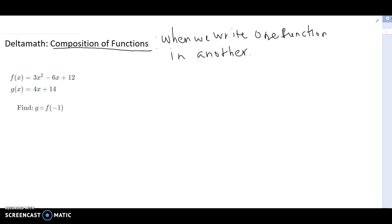This is an example from composition of functions from delta math. So let's go ahead and look at this problem. It gives us f of x equals 3x squared minus 6x plus 12. And g of x is 4x plus 14. And it's asking us to find g composed of f negative 1. If we can review that this notation is actually the same notation as g with the function f evaluated at negative 1 inside.